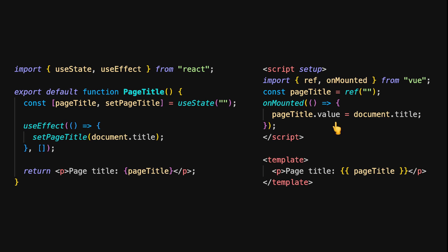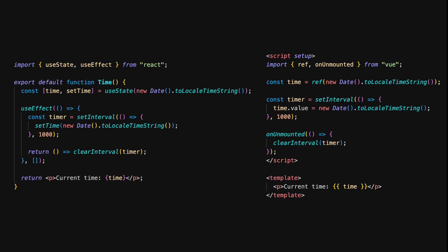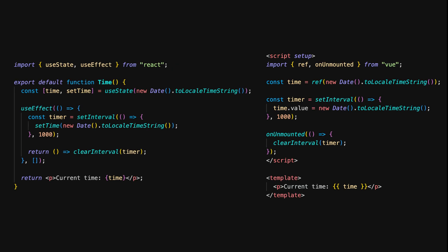We set the pageTitle reactive variable to the document's title during the mount phase. Let's explore how React and Vue handle cleanup logic when a component is unmounted, like clearing intervals or event listeners. In React, you handle this in the useEffect hook by returning a cleanup function. useEffect sets up a setInterval to update the current time every second; when the component is unmounted, the cleanup function clears the interval to prevent memory leaks. In Vue, the onUnmounted lifecycle hook is used to handle cleanup when the component is destroyed. We create an interval to update the time every second, and when the component is unmounted, we clear the interval using onUnmounted.